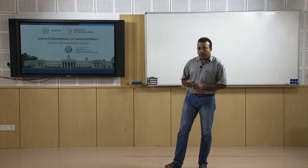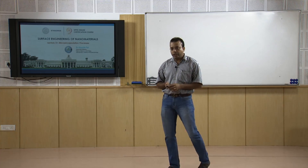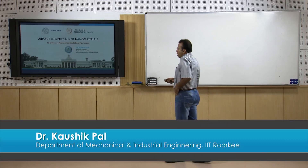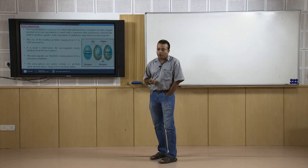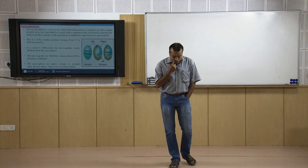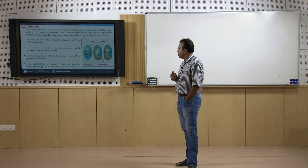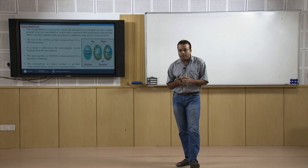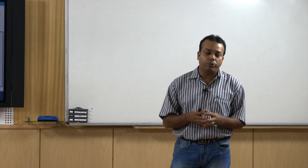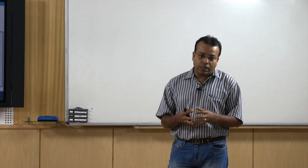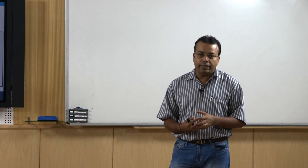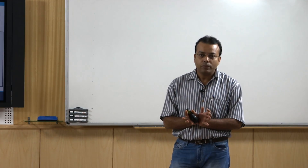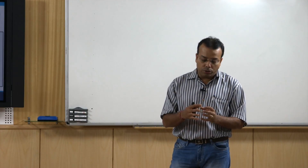Today we are going to start our new lecture on the microencapsulation process. Before going into details about microencapsulation, first you have to know what microencapsulation means. Microencapsulation is a coating process where we can coat solid or liquid materials by giving a coating of any kind of polymer or ceramic materials onto them, so that the material can be surrounded by another material onto the substrate.